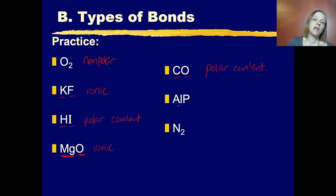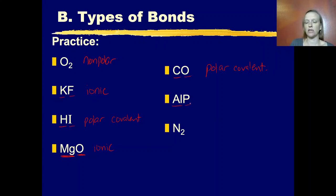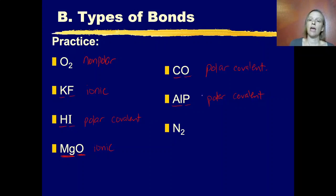Magnesium oxide: we have a metal and a nonmetal, and even though they're not as far apart as potassium and fluorine, they're still far enough apart to be ionic. Carbon monoxide: both are nonmetals right next to each other on the periodic table, so it's covalent — and since the atoms are different, it's polar covalent. Aluminum phosphide: aluminum and phosphorus are very close together on the table, so despite being a metal and nonmetal, they're quite close in electronegativity — this is polar covalent. Nitrogen gas: two atoms of the same element, nonpolar covalent.